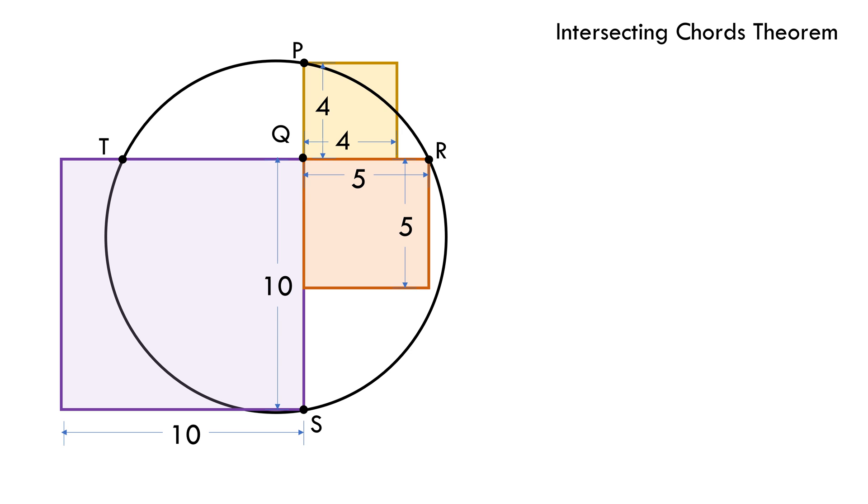From Intersecting Chords Theorem, we can write PQ times QS equals TQ times QR. We replace the values of the known lengths into the equation. This gives us TQ equals 8 units.